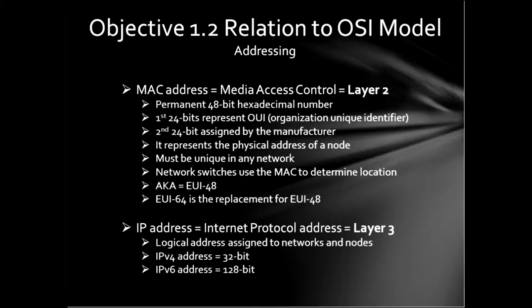IP addresses always map to layer 3 and are internet protocol addresses — they are logical in nature. You can assign an IP address to just about anything as long as you follow the proper addressing schemes. IPv4, which is what most people are most knowledgeable about, is a 32-bit address in dotted decimal notation — addresses like 192.168.1.0. You will also have to learn some binary in this course, especially if you move on beyond the Network+.